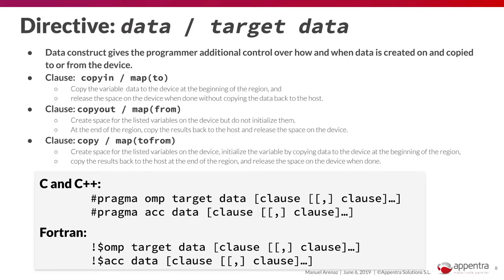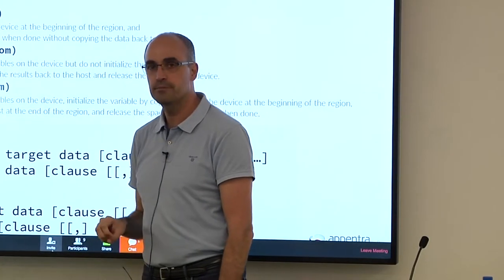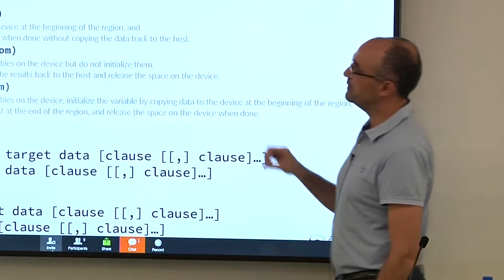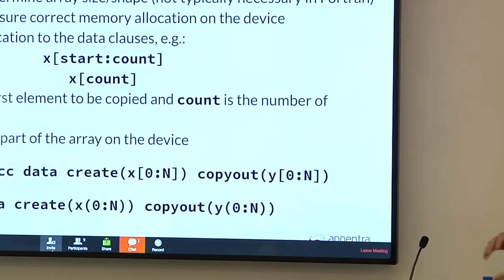And there is some data that you will probably want to copy in and out for some reason in your application. So copy or map to from. And you can see, Paragraph Trainer generates copy in, copy out, copy and map clauses for you to handle data scoping.